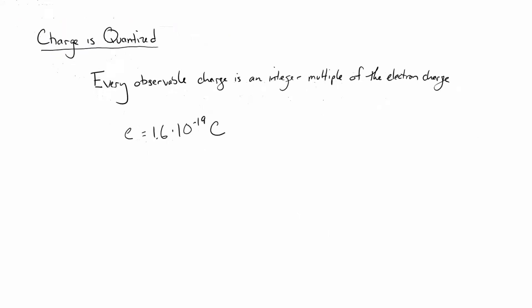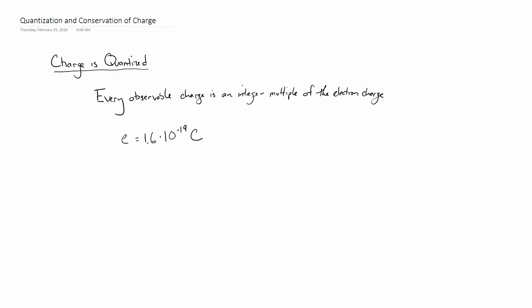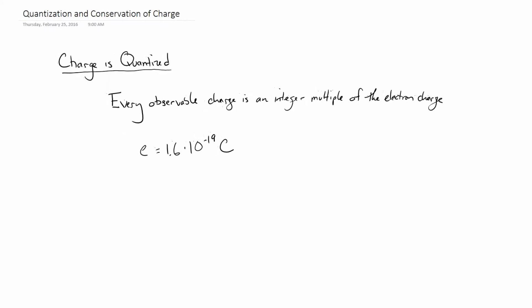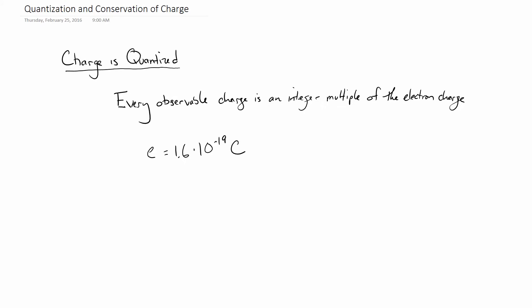Hello. Let's talk about quantization and conservation of charge. This is building on our idea of electric interactions — we're trying to get a little more detailed about this. To start with, this idea that charge is quantized means that every observable charge is an integer multiple of the electron charge.